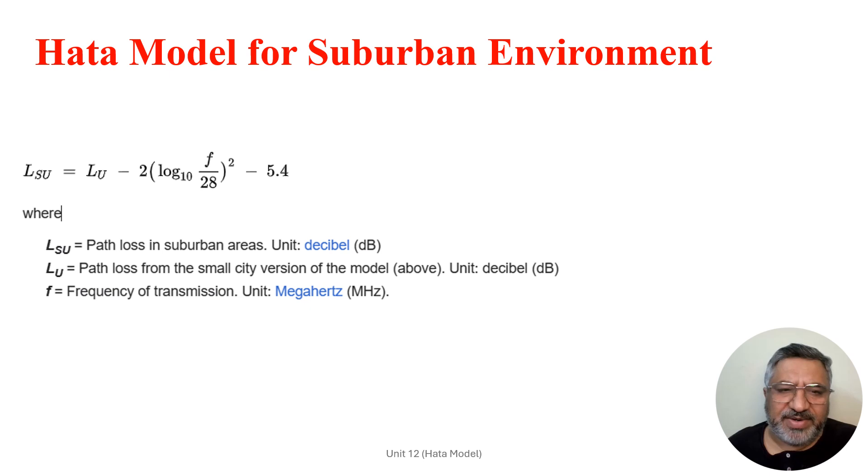Hata model for suburban environment can be defined as LSU equals LU minus 2 multiplied by log of F over 28 squared, minus 5.4. LSU is defined as the losses in suburban areas, and LU is losses in urban areas with units in decibels. F is the frequency of transmission.